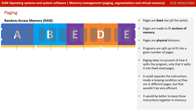It's quite possible that paging could separate the instructions inside, say, a looping condition, so they're in different parts of memory. And of course this is not very desirable as it becomes quite inefficient. It would be better to keep those kinds of instructions all together.